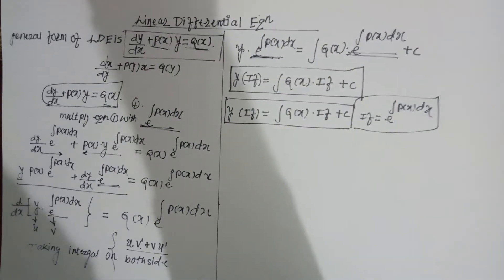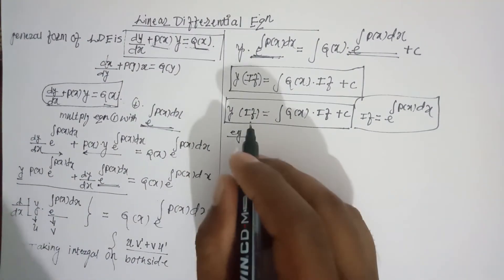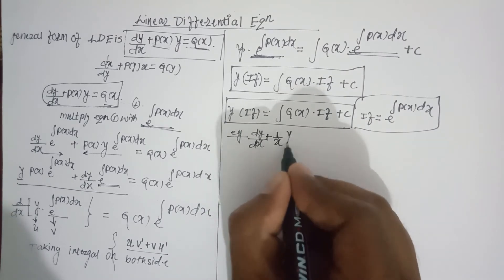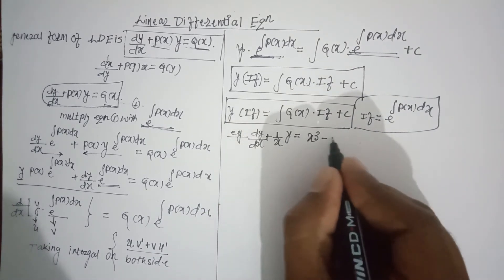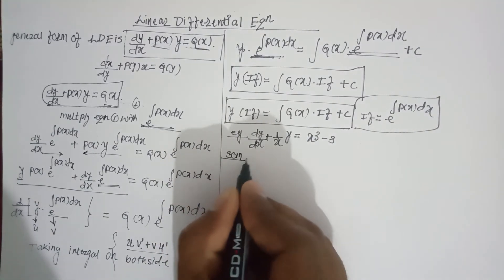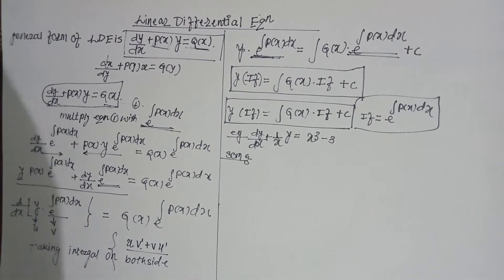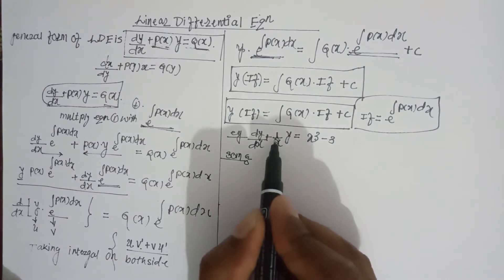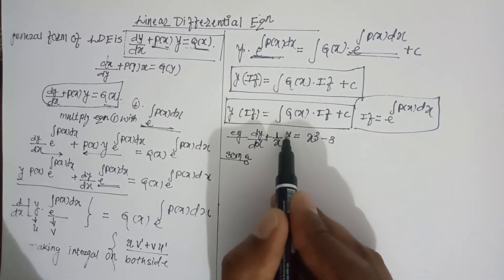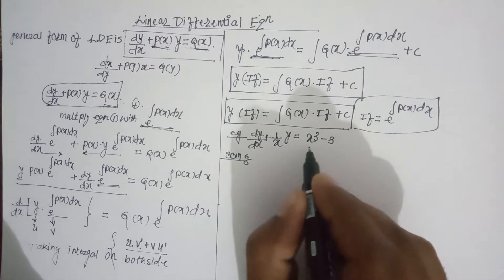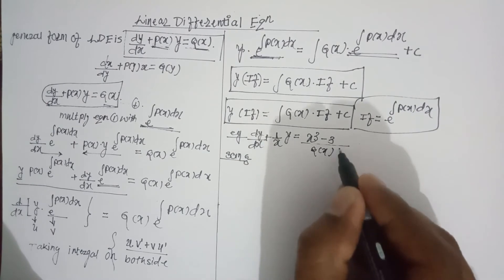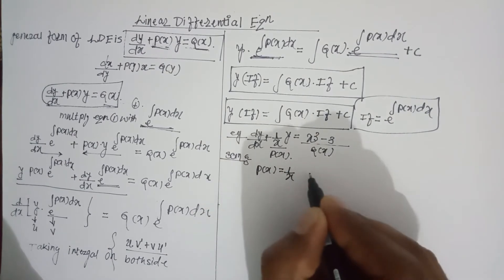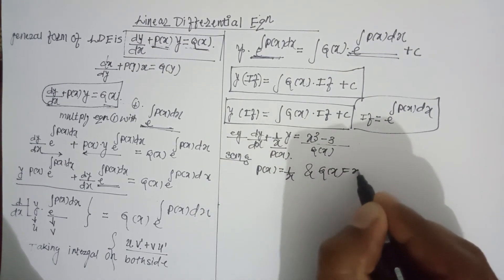Let's see a simple example: dy/dx plus (1/x)·y equals x³ minus 3. The solution — first, check that it is in the general form of a linear differential equation dy/dx plus P(x)·y = Q(x). Comparing: P(x) equals 1/x, and Q(x) equals x³ minus 3.